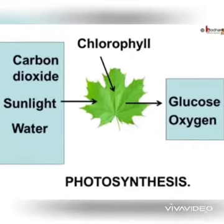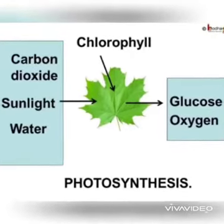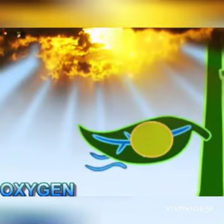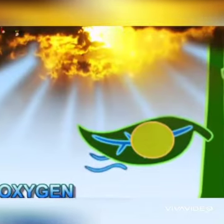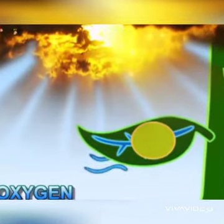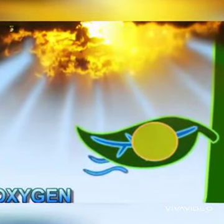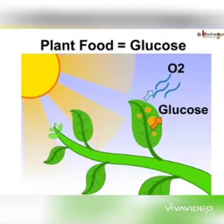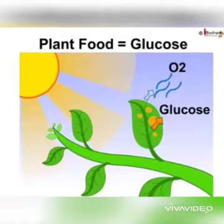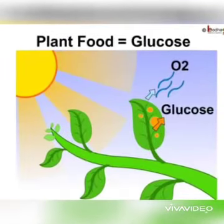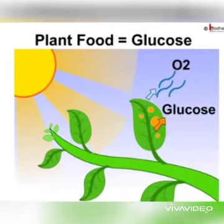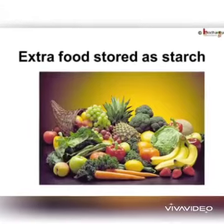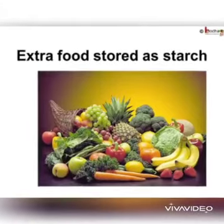Oxygen leaves the plant through the stomata. Glucose gives nourishment to the plant. The extra glucose prepared is stored by the plant in the form of starch for later use.